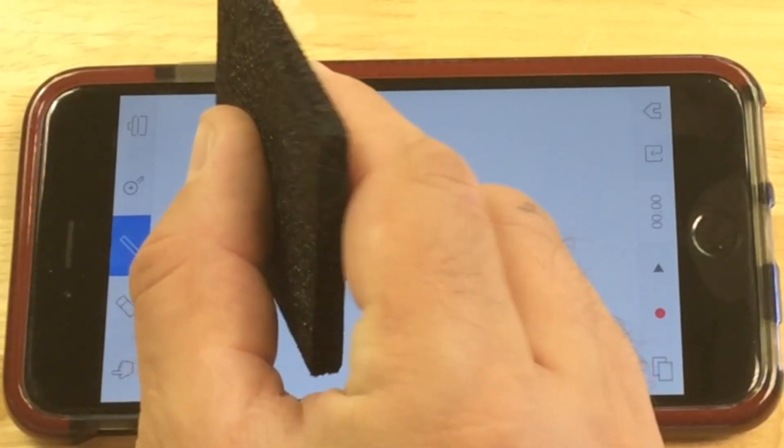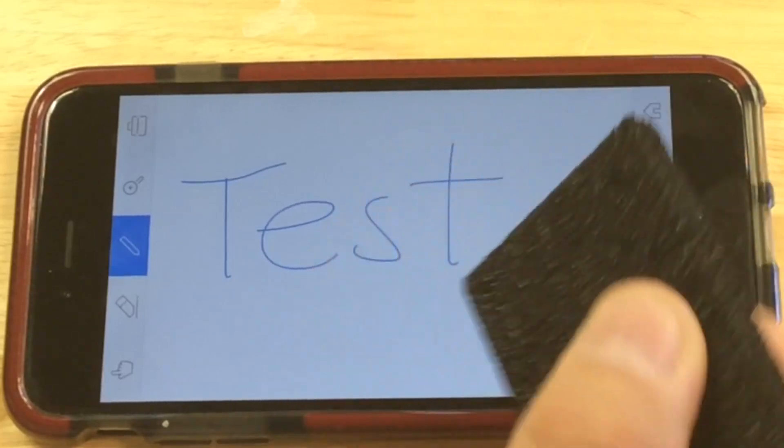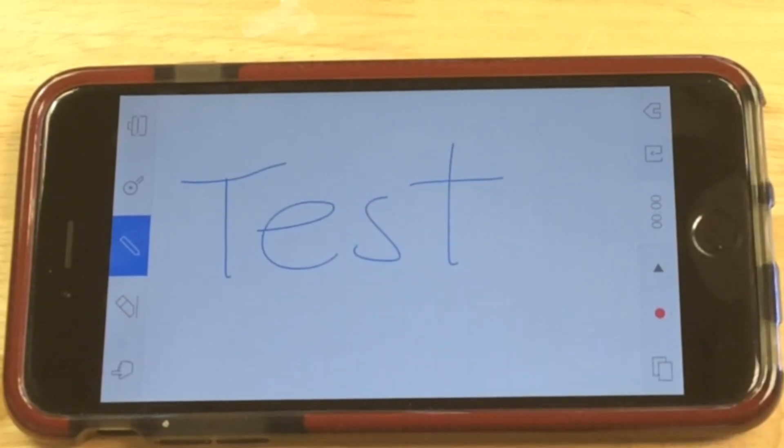Now it's pretty well known that conductive foam works as a stylus on an iPhone. So I wondered, could I print a stylus using conductive filament?